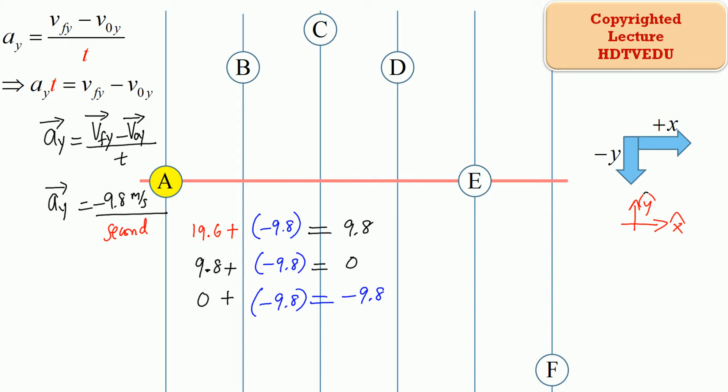So we take the zero and add negative 9.8 to it and we get negative 9.8. What does negative 9.8 mean? We are on our way down — it's pointing down. One second later, we take the negative 9.8 and add negative 9.8 again, and we get negative 19.6.